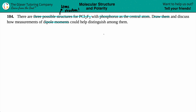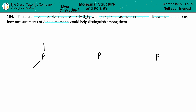We need to draw three different Lewis structures, all with phosphorus as the central atom. I'm going to start by drawing P, P, and P for each one. For each structure, phosphorus has two chlorines and three fluorines around it, giving a total of five bonds to the central atom. A central atom with five single bonds has a molecular geometry of trigonal bipyramidal.